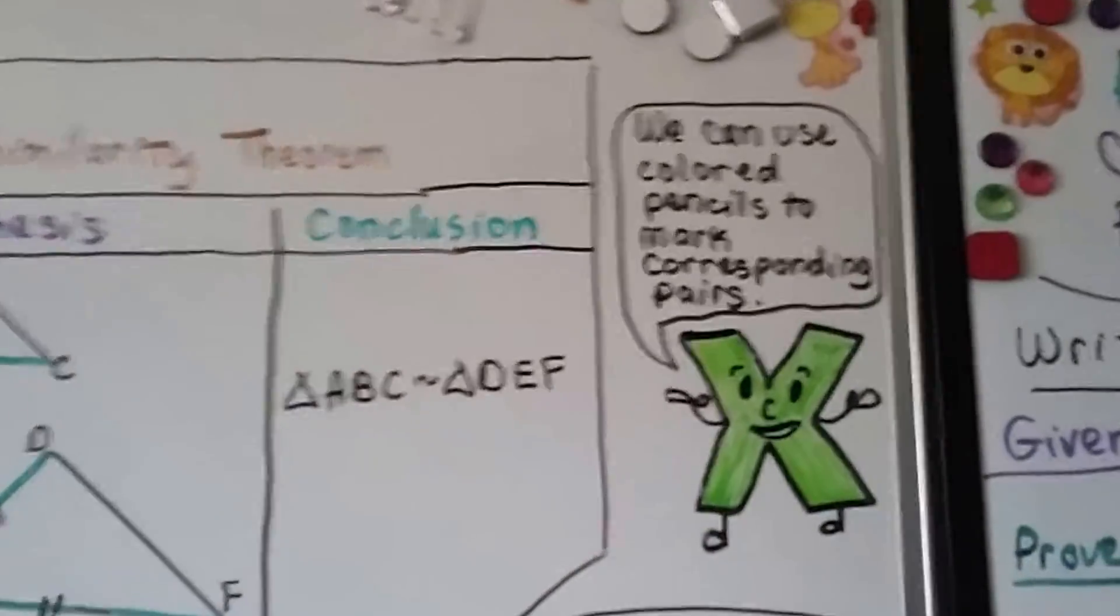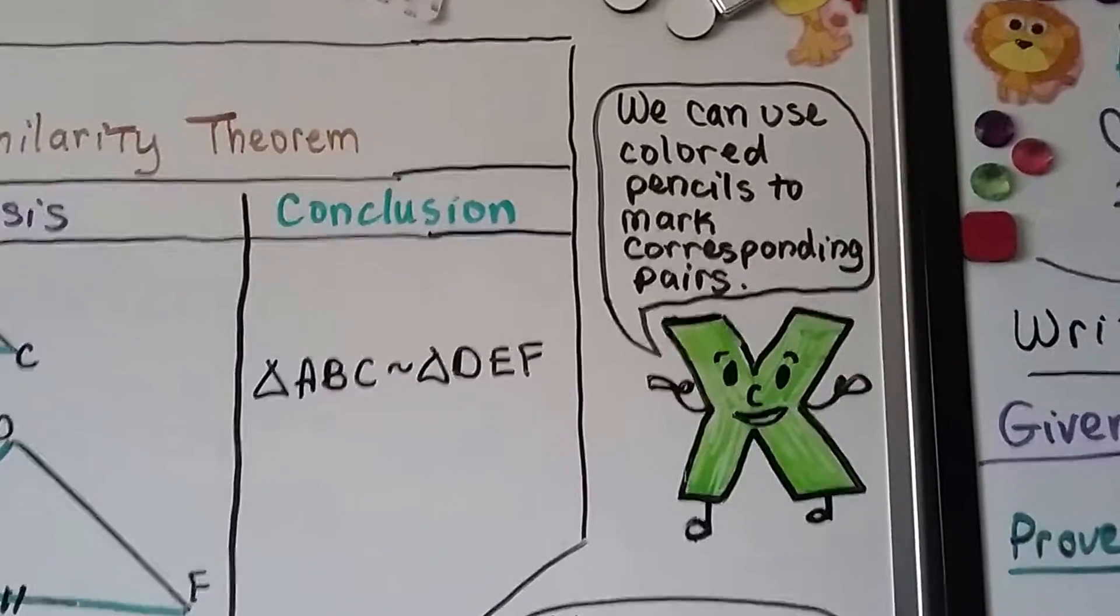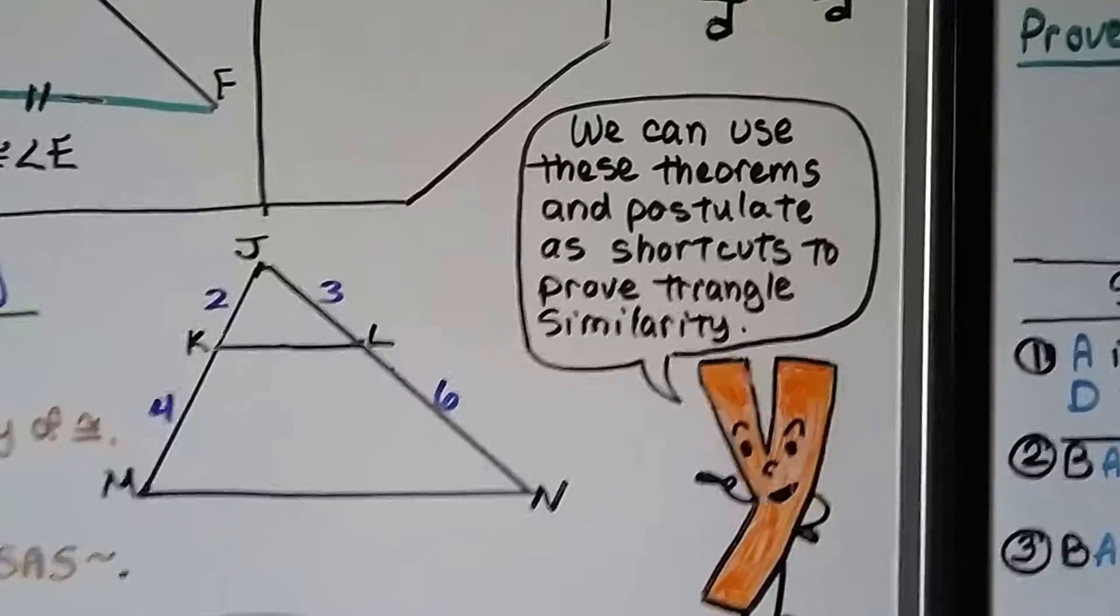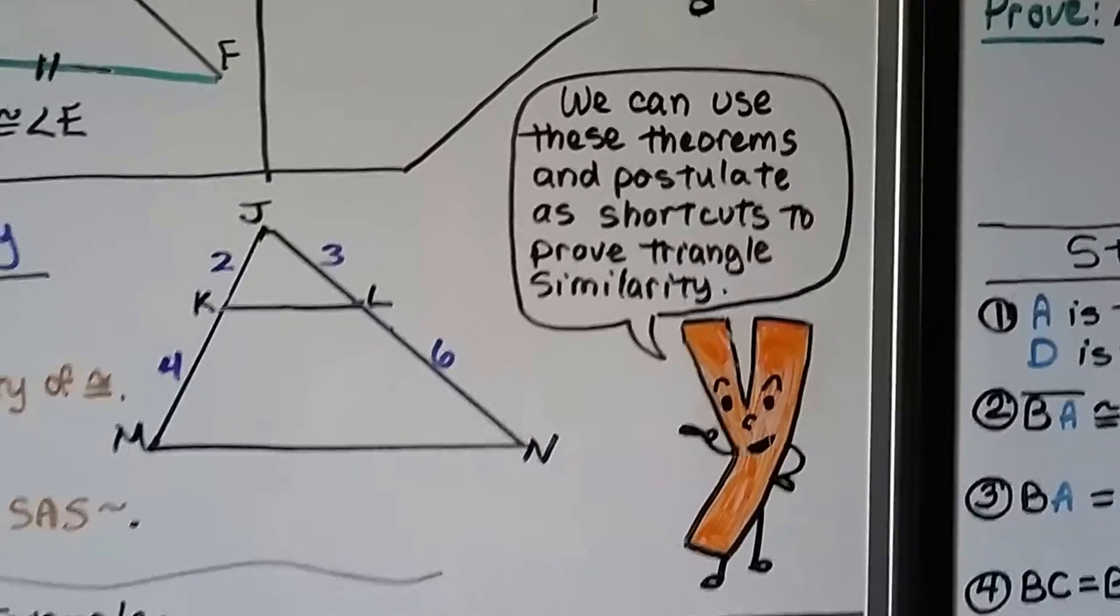Remember that you can use colored pencils to mark your corresponding pairs if that will help your eyes. And we can use these theorems and postulate as shortcuts to prove triangle similarity.